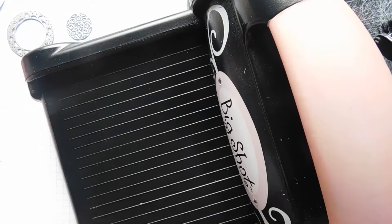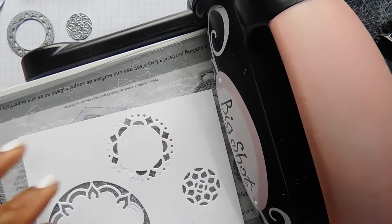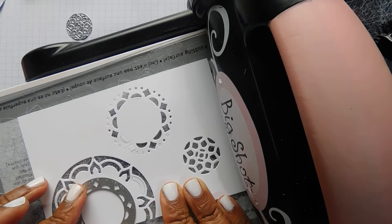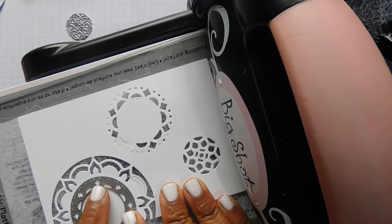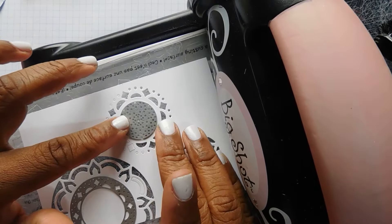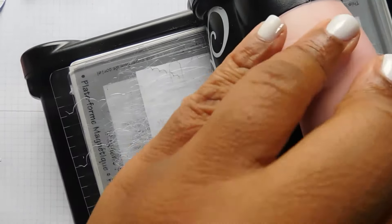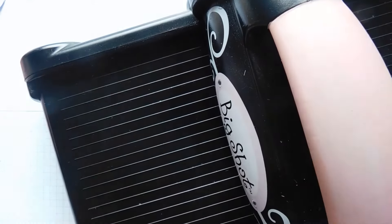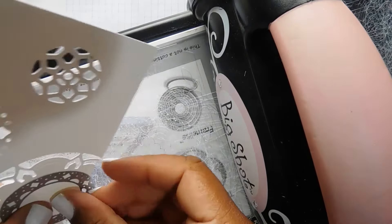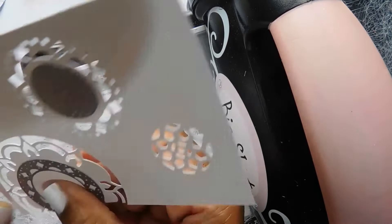You need to make sure all of the bits are out. Otherwise when you come to do the next cut, it won't cut quite so smoothly. And the die brush is the quickest way of doing that. Even though I do enjoy sitting with a poke tool and poking them all out. So for the next bit I'm actually going to use the magnetic plate. So bring that in. And then we need to add this one to the middle of there. So I'm just lining up.